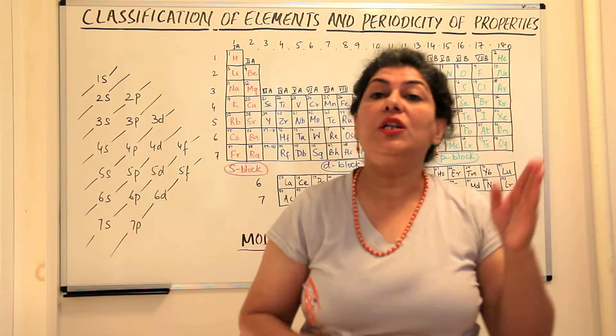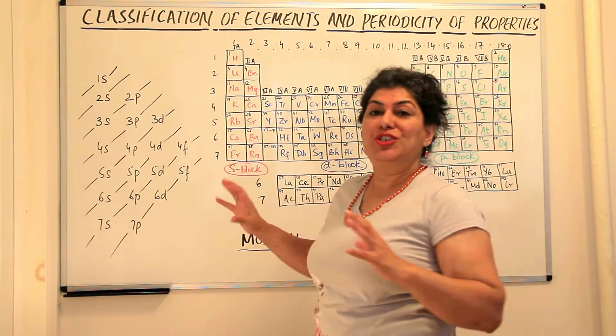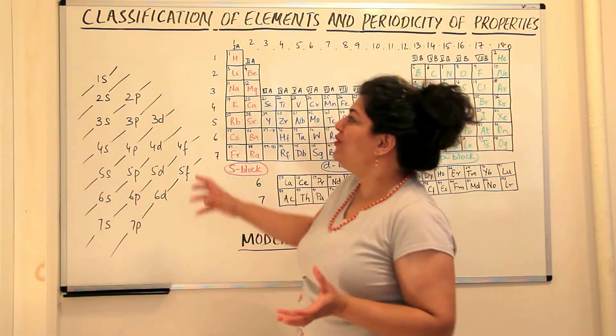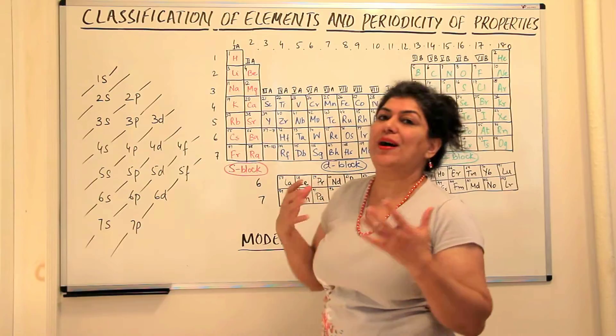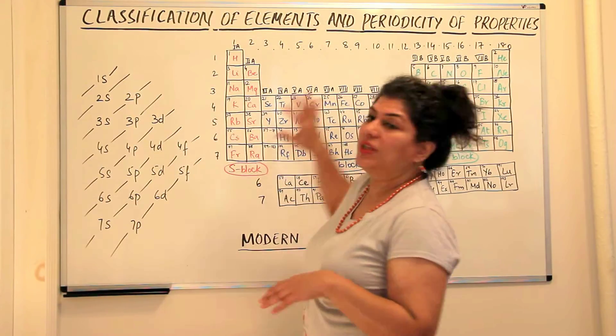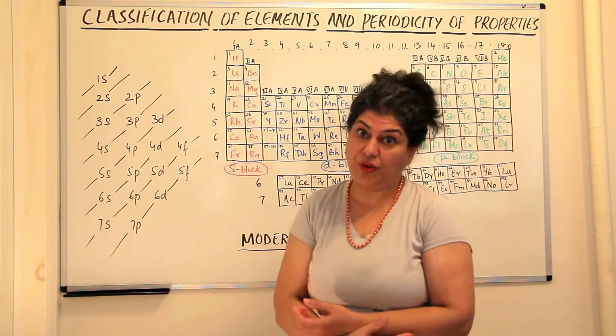So the vertical rows were called groups. Now I want you to really understand how the electronic configuration is related and why do I say that this entire periodic table is made on the basis of electronic configuration.